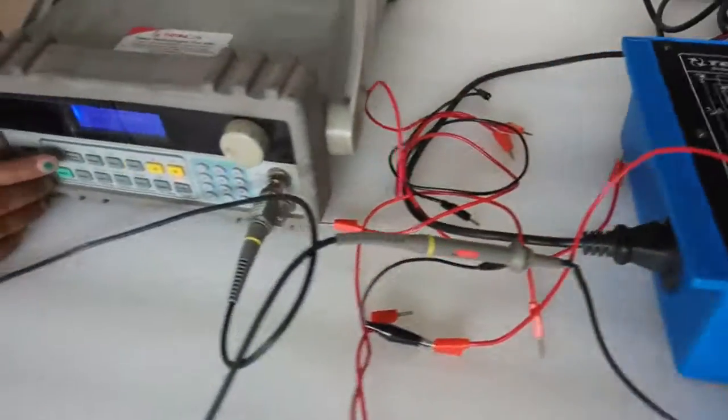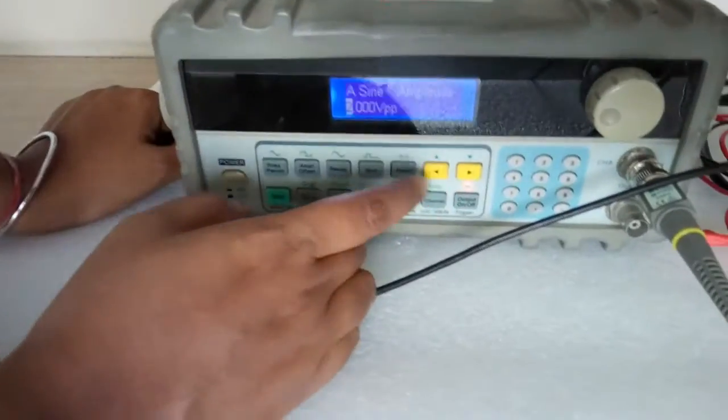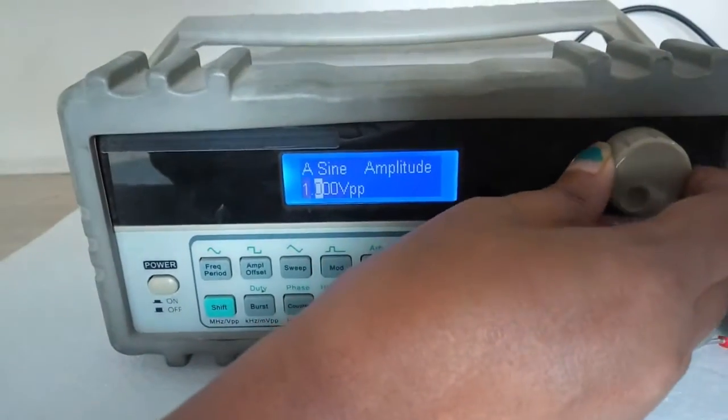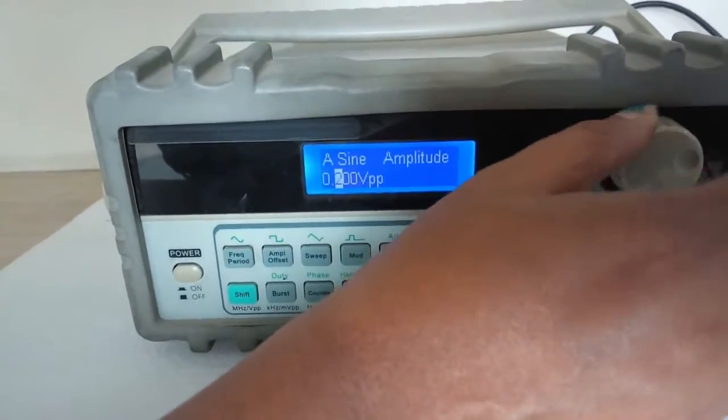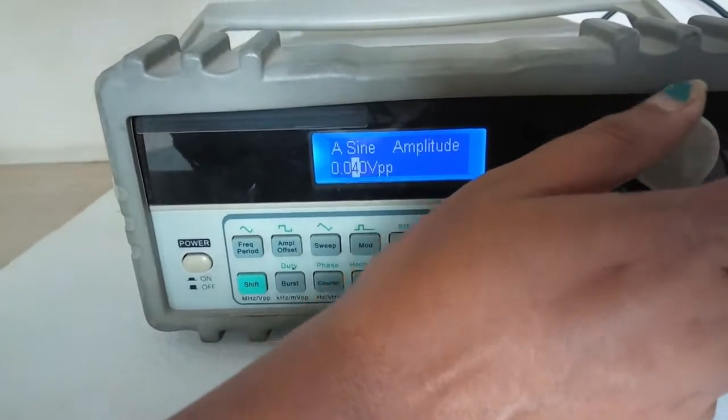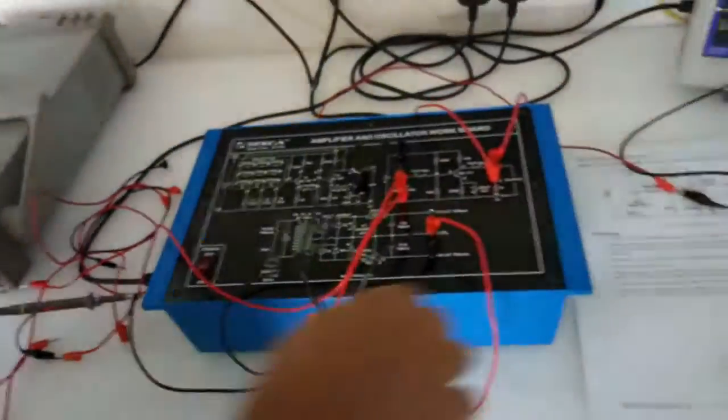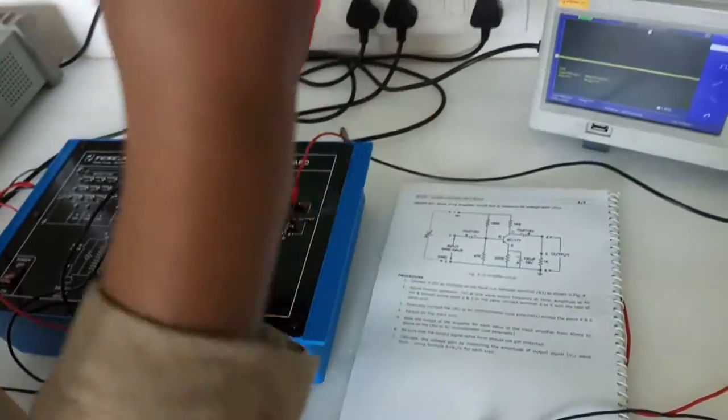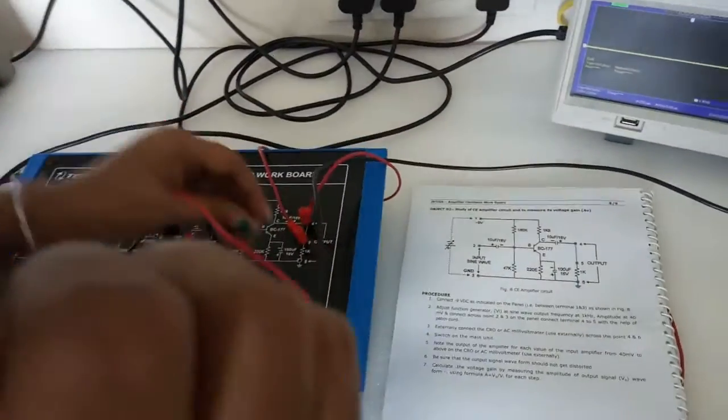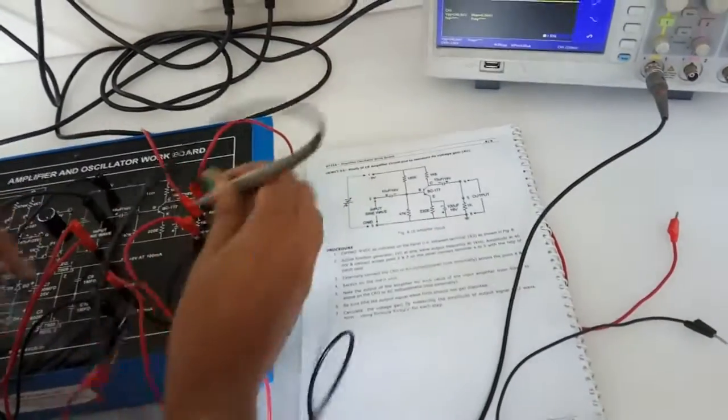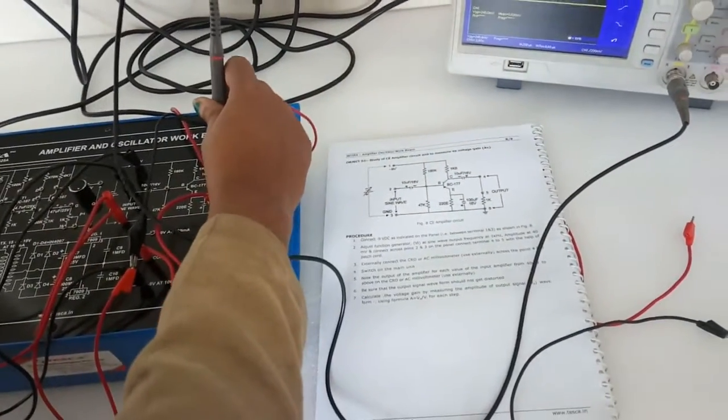Here we need to give an amplitude of 40 millivolts. Give 40 millivolts and connect the CRO.